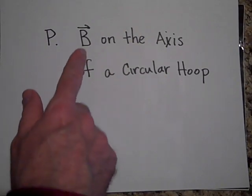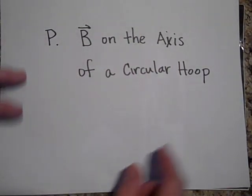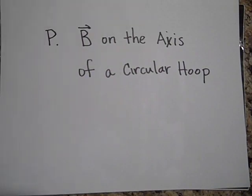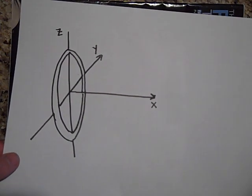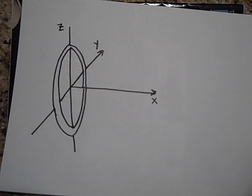Okay, this video is on the magnetic field on the axis of a circular hoop. So what about this magnetic field on the axis of a circular hoop? Here's a circular hoop. It's got some current in it. Let's say the current is going around like this.